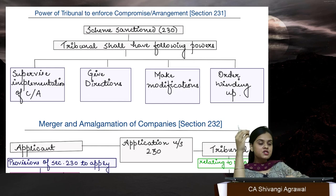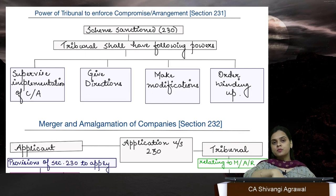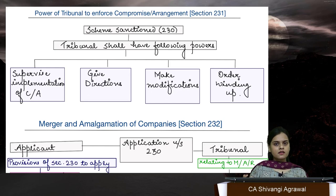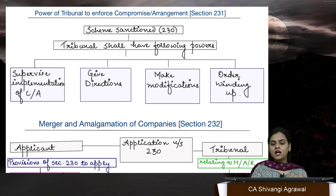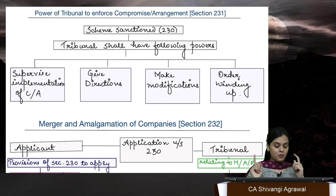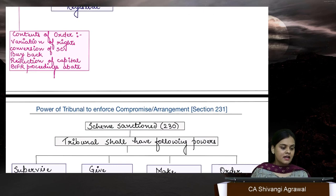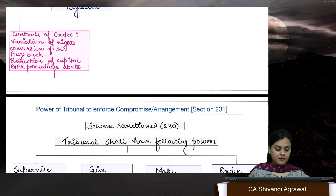What do we mean by BIFR proceedings shall abate? If it is a sick company, it moves to BIFR to revive itself. Suppose we have interacted with creditors and they have reduced our repayment burden — the company now has funds to invest in core business and earn profits. So there is a ray of hope that the company will automatically return to good financial state post this compromise or arrangement, and hence BIFR proceedings are not required — they shall be put on hold. Additionally, for buyback or reduction of capital, you must also follow section 68.